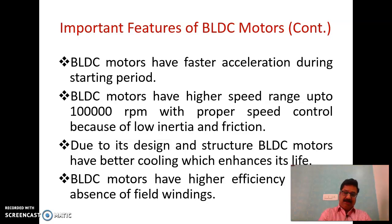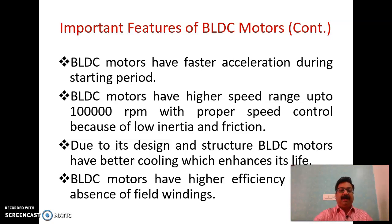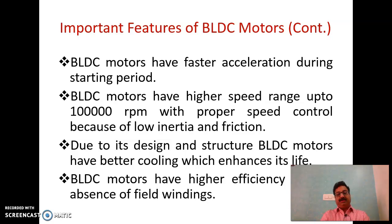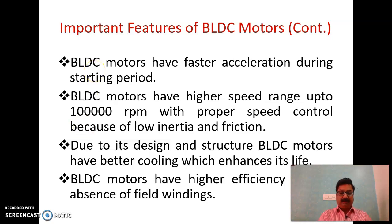Because of this, the speed range is very good. In the case of the brushless DC motor, the speed range is in the range of 10 to the power 5 RPM, so these motors have a better speed range. Due to low inertia and the absence of other parts, friction is also low.